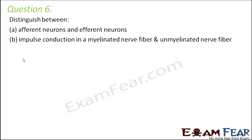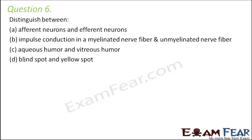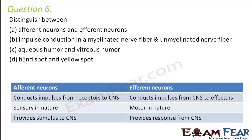Distinguish between afferent and efferent neurons. Afferent means bringing things inside — afferent neurons carry impulses from receptors to the central nervous system, from sensory organs to the CNS. Efferent neurons conduct impulses from the CNS to the effectors. Afferent neurons are sensory in nature and efferent neurons are motor in nature.